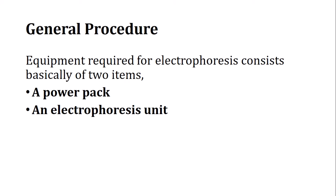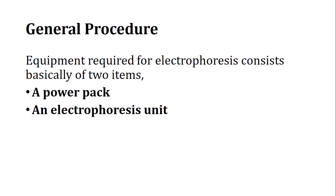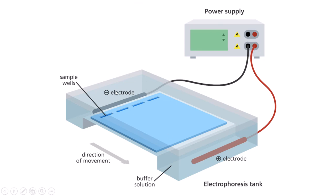Now if you talk about the general procedure, there are two basic items: a power pack and an electrophoresis unit. The power pack actually supplies the electricity and can control the electricity. We can stop or start the electricity through this, and there is an electrophoresis unit where the actual electrophoresis is performed. This is a simple figurative representation showing a power supply and an electrophoresis unit.